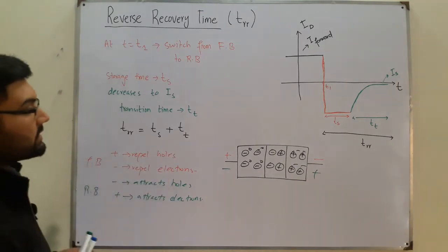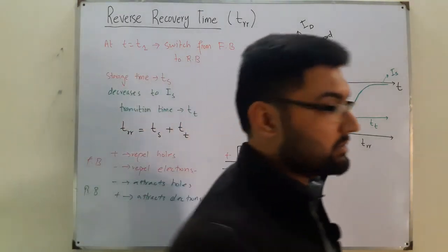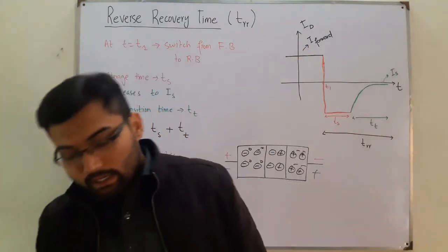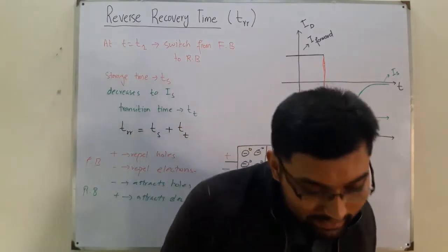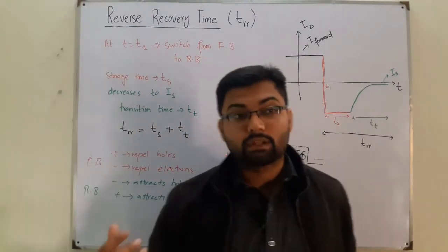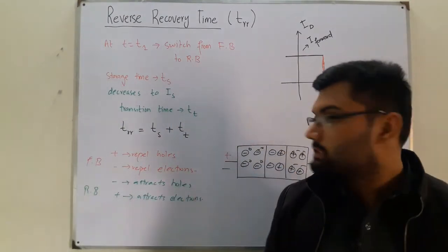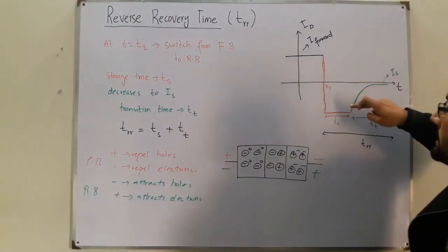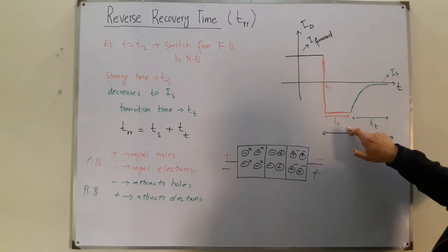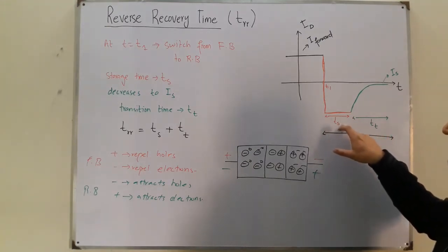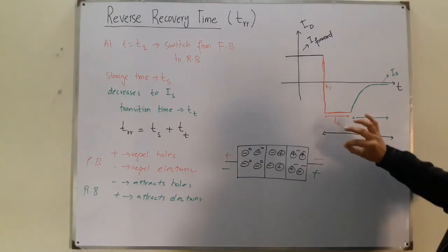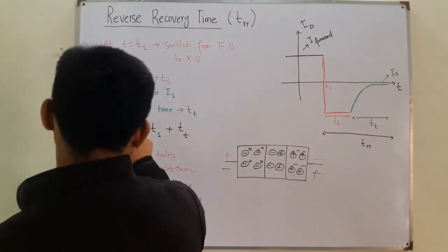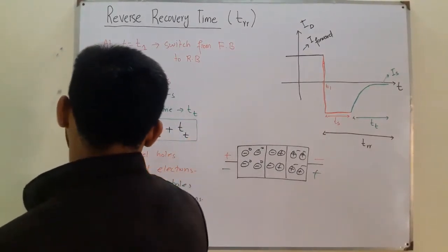A direct change is impossible, just like the capacitor and inductor phenomena where they resist a certain change. You can compare it to that — it does not have a sudden change in its properties. So it takes some time, with current still flowing when switched to reverse bias. This is the storage time, and then the transition time in which the current approaches the reverse saturation current Is. The reverse recovery time is the sum of these two.